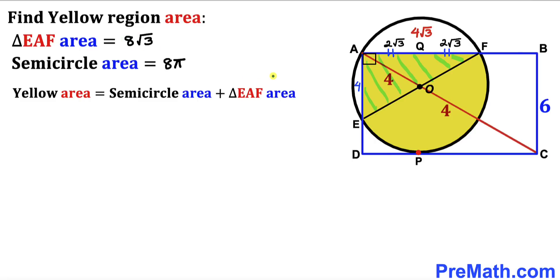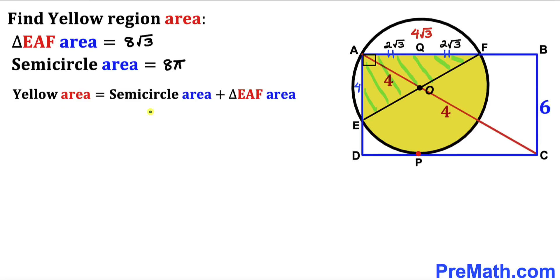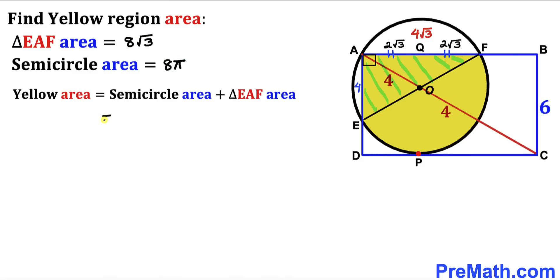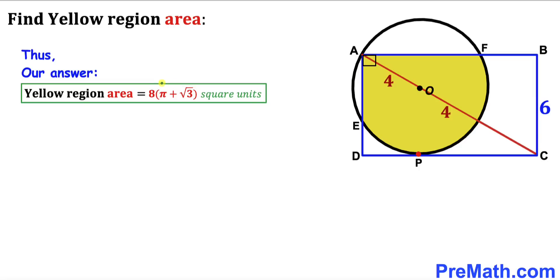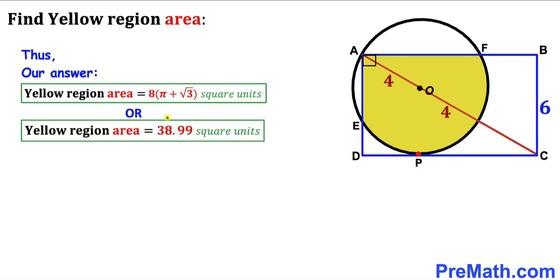Here's our final step. The yellow shaded region area equals the semicircle area plus the triangle area: 8π + 8√3, which can be written as 8(π + √3) square units. This is equal to approximately 38.99 square units. Thanks for watching and please don't forget to subscribe to my channel for more exciting videos!